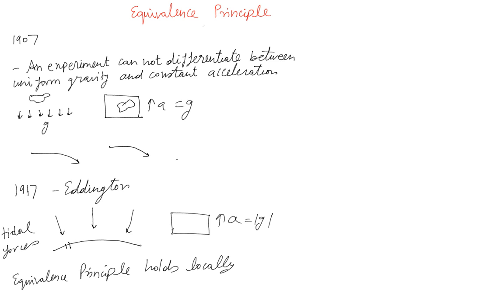For example, if there is an elevator moving up with an acceleration A and you drop two balls, in a uniform acceleration you will see this is what happens. But if you are in a gravitational field and you drop the balls, the balls are going to drop like this.